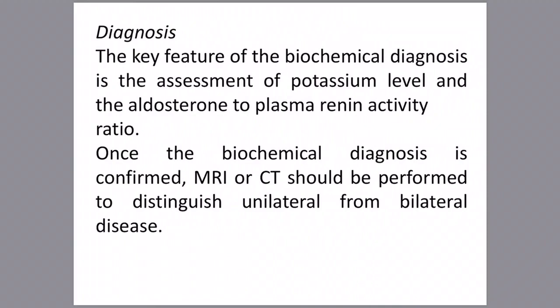Hypokalemia causes muscle weakness, cramps, intermittent paralysis, polyuria, and polydipsia — all related to electrolyte disturbance. Diagnosis of Conn's syndrome depends on biochemical assessment: serum potassium is decreased, aldosterone is elevated, and renin activity is suppressed. The resultant aldosterone-to-plasma renin activity ratio is increased. Once biochemical diagnosis is confirmed, further imaging is pursued.